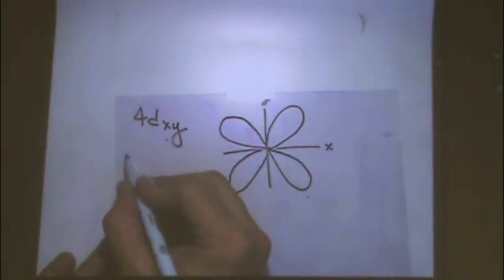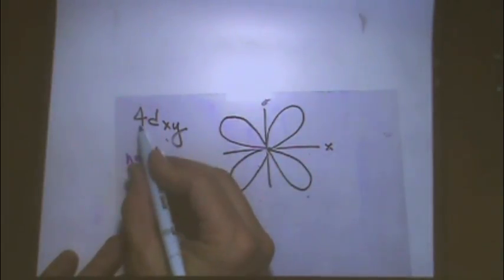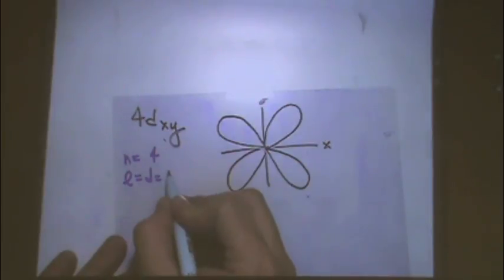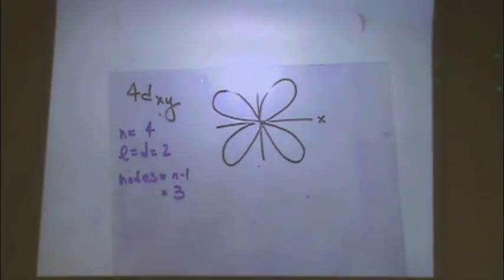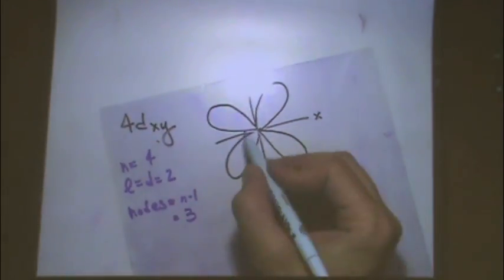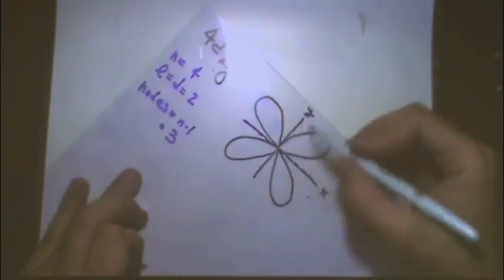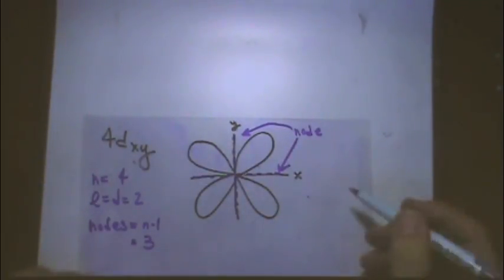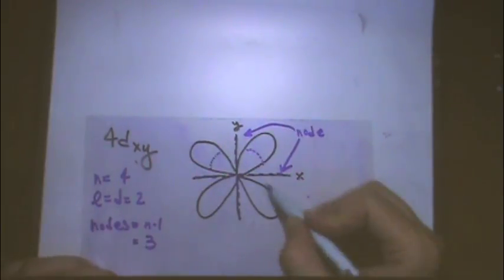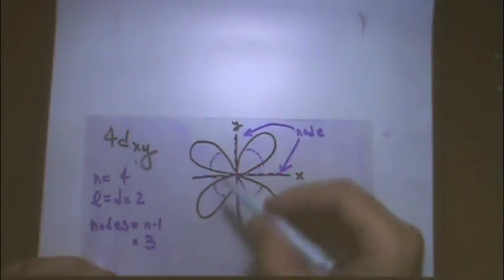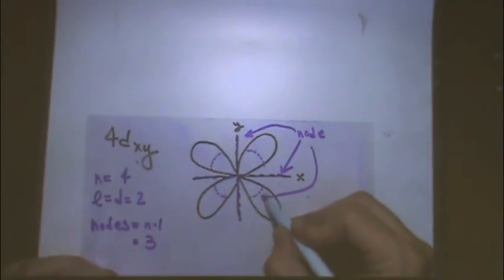Now, let's do some of the other parts. I could ask what n is. It is 4. L is 2, which is D. Nodes? N minus 1 or 4 minus 1 which is 3. Let's draw those in. I'll draw them in purple. For example, two of the nodes are the axes or these planes that go through the axes. Another one of the nodes is where? There. The way I draw it, I don't know how your instructors draw it, but this is kind of the way people like to draw it these days. A circumscribed sphere inside. So, this is also a node.